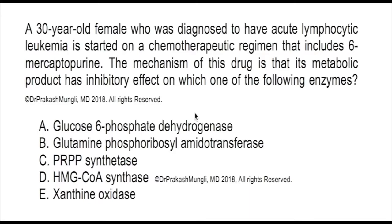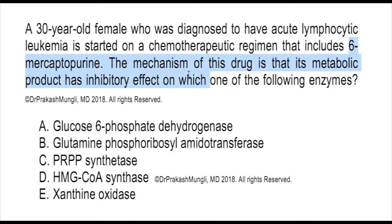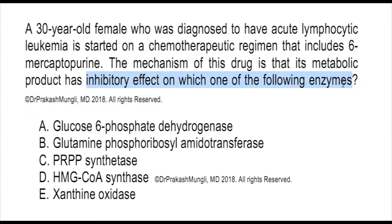Hey everyone, Dr. Mungle here. Before I move on to give an explanation for this question, kindly go over the question and answer it by yourself. The question is about acute lymphocytic leukemia, and one of the drugs used in the chemotherapeutic regimen mentioned in this stem is 6-mercaptopurine. The question asks about which enzyme the metabolic product of this drug has an inhibitory effect on.